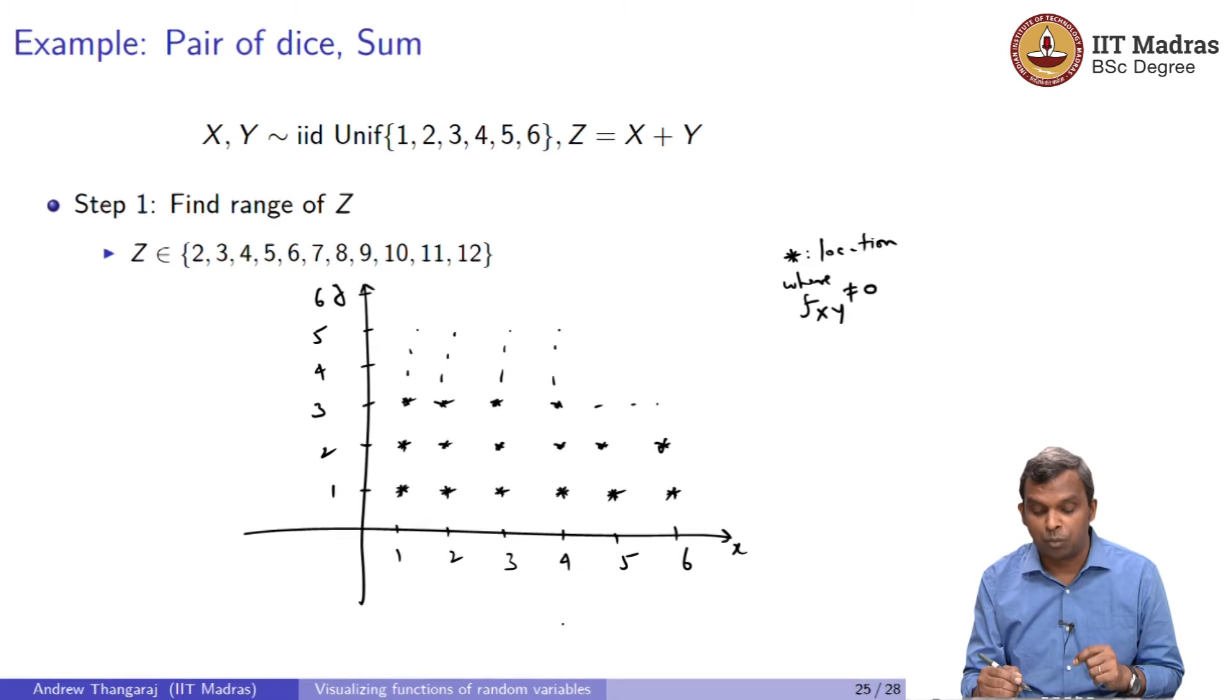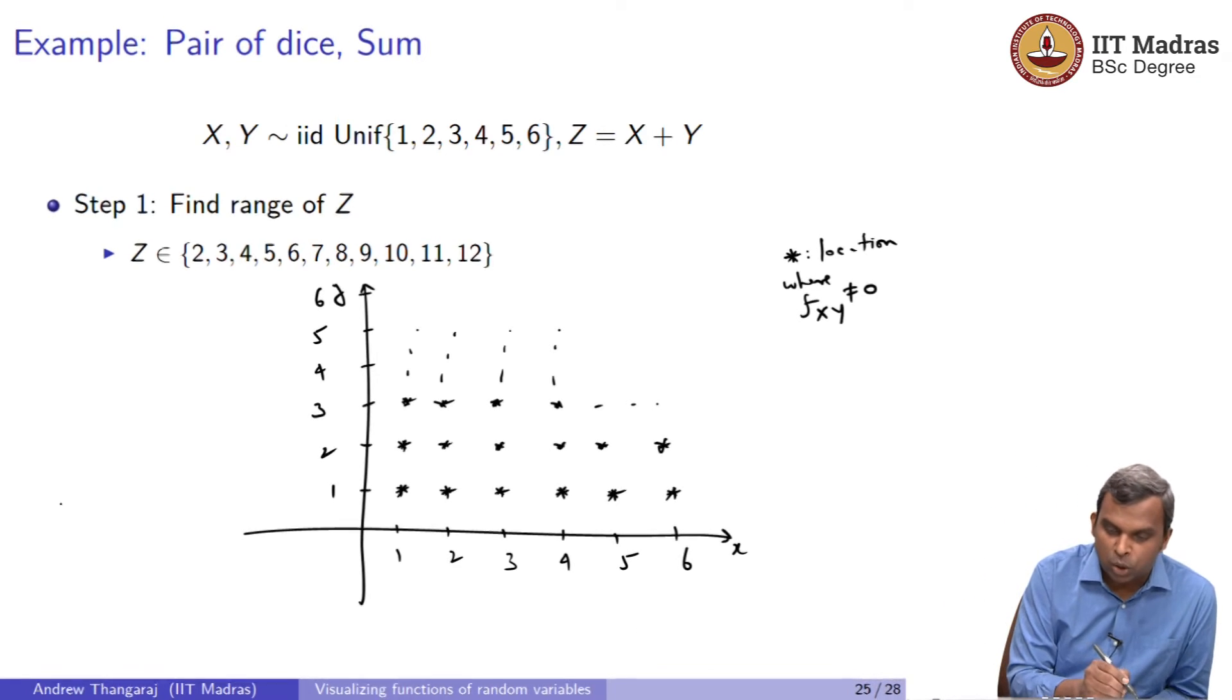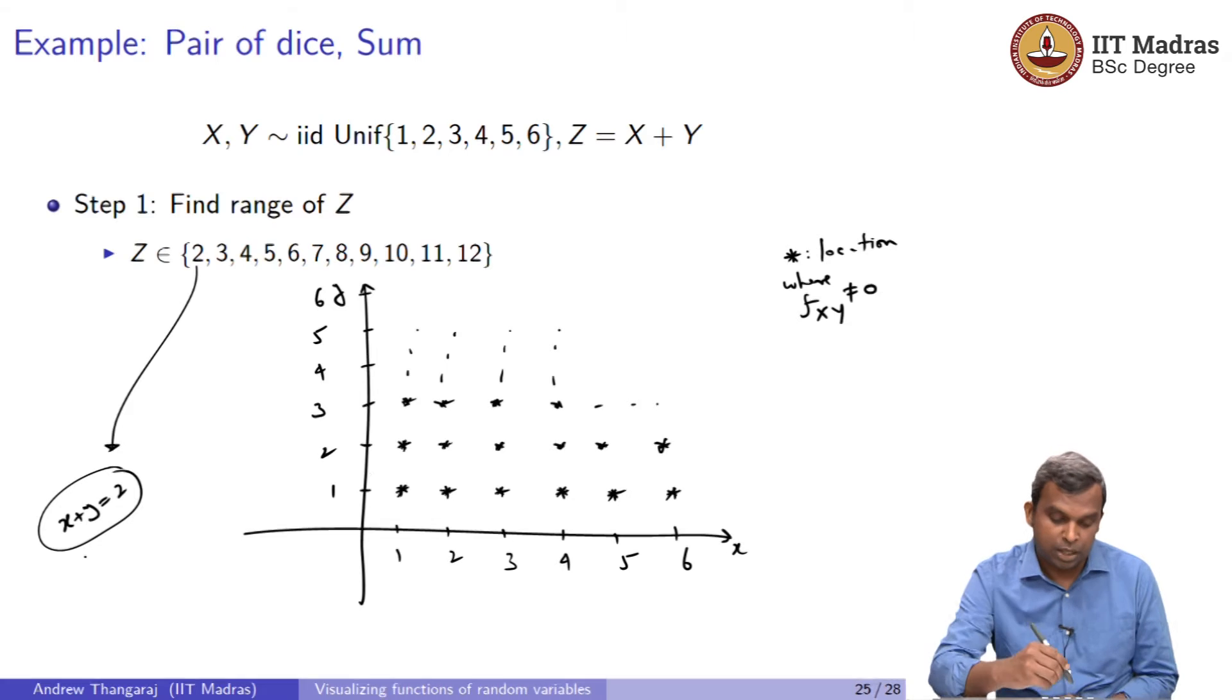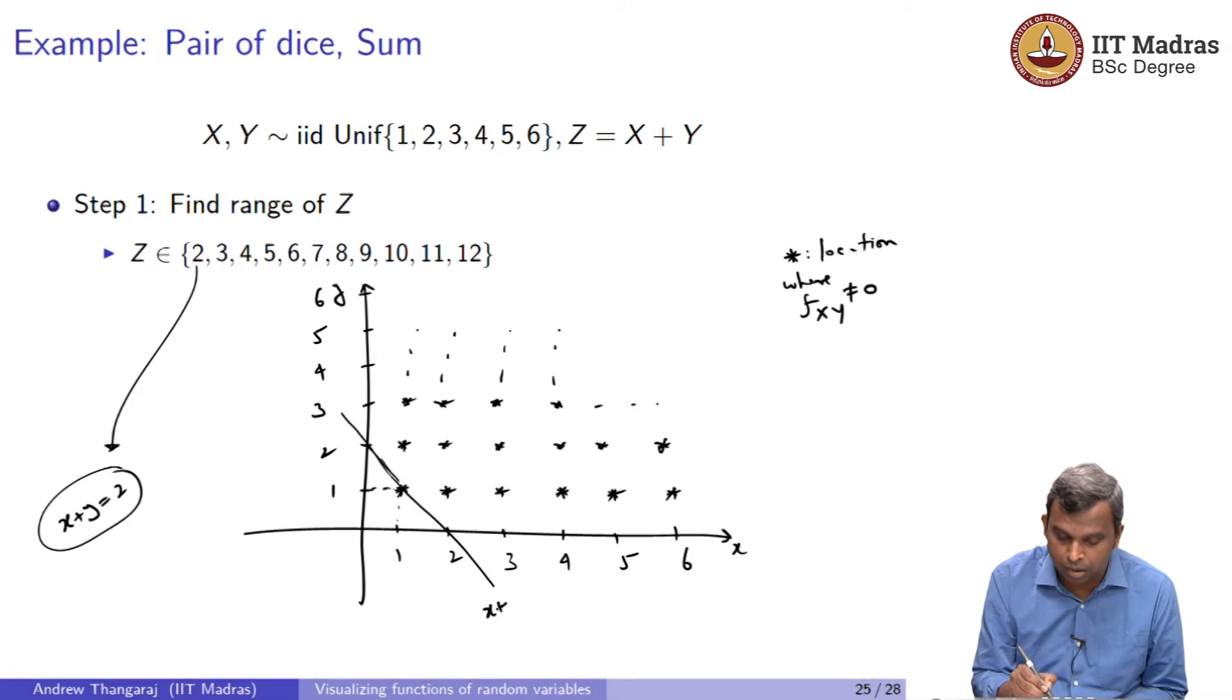Start with the stars, the points that x and y can take together. And even in moderate size examples, you can do this. Then, on top of this, you have to now start doing the contours. You have to be careful. I have not drawn it to scale. What is the contour of x plus y equals 2? That is the first contour for the values of z. This is 1 comma 1. So, this will be the contour. So, this is x plus y equals 2. Do you agree?